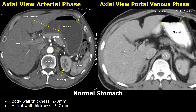Intravenous contrast material is injected and images are captured during the arterial phase. This enhances the blood vessels and helps highlight the vascular structures and perfusion characteristics of the stomach wall.